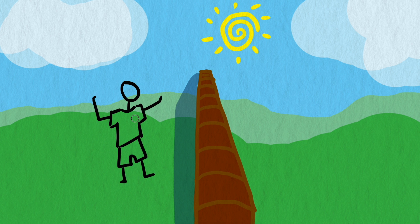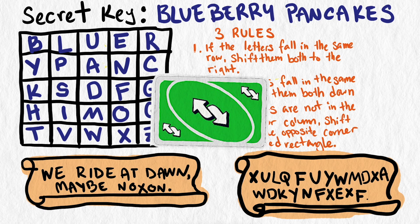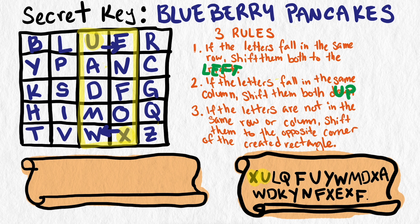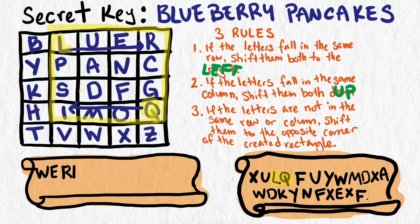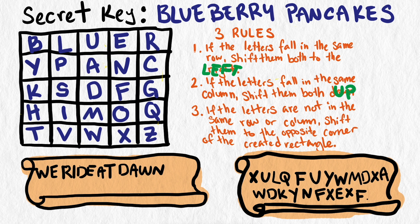So how could a friend read the encrypted message? They simply take the encoded message, or ciphertext, and using the same table constructed with the secret key, follow the same three rules in reverse. If the letters fall in the same row, shift them both one letter to the left. If the letters fall in the same column, shift them up. And if the letters are neither in the same row nor column, consider the rectangle made by them and move each letter to the opposite corner within the same row. So X, U forms a rectangle and becomes W, E. L, Q becomes R, I. F and U become D and E. Y, W become A, T. M and D are in the same column, so we move them up to get D, A. Then X and A become W, N. We can recreate the original message: "We Ride at Dawn."